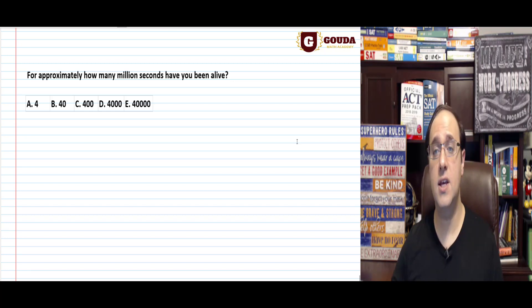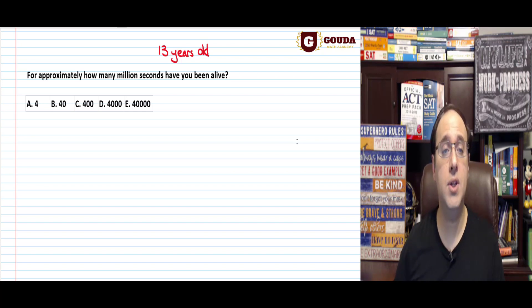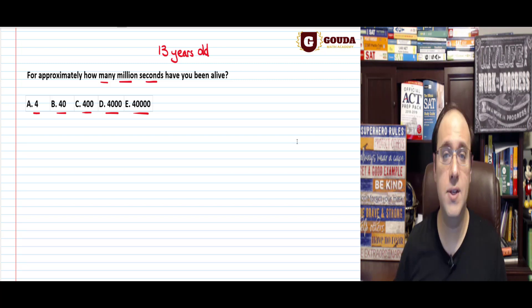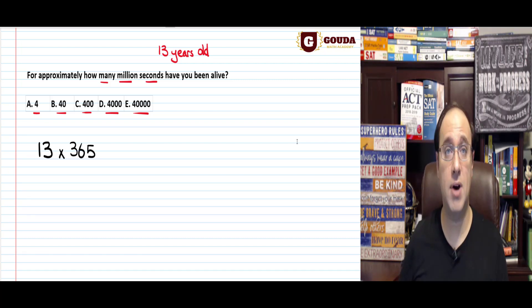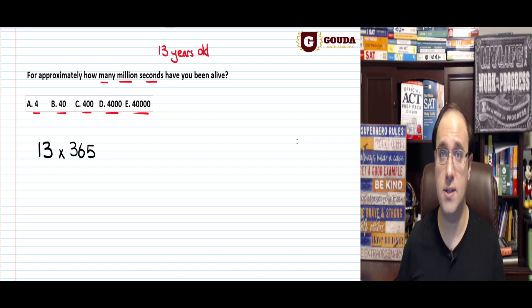First of all, let's assume that you are 13 years old. For approximately how many million seconds have you been alive? 4 million, 40 million, 400 million, 4000 million, or 40,000 million seconds. This is an easy question. I am 13 years old, and every year has 365 days. So how many days old am I? 13 years times 365 days.